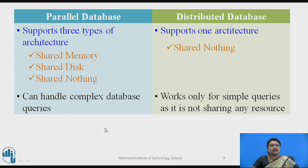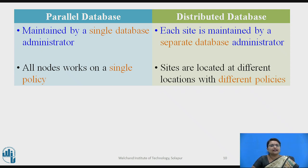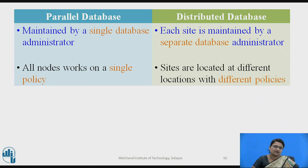A parallel database can handle complex database queries, whereas in a distributed database they work on simpler queries and do not share any resources. A parallel database is maintained by a single database administrator, whereas in a distributed database a separate administrator is assigned to every site. In a parallel database, a single DBMS is used across all nodes, whereas in a distributed database it is not necessary for every site to use the same DBMS — each site may use its own. Nodes in a parallel database work on a single policy, whereas in a distributed database policies may differ across sites since various DBMS software may be in use.